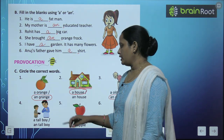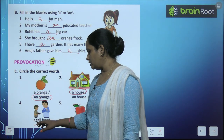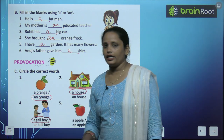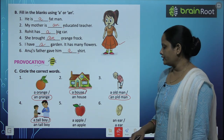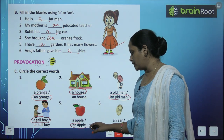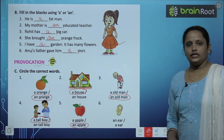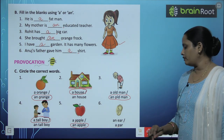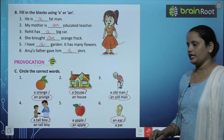A Tall Boy या An Tall Boy? Tall का T एक consonant है, तो A Tall Boy is the correct answer. A Apple या An Apple? Apple का पहला letter A है — A तो एक vowel है, तो An Apple को circle कर देते हैं. An Ear या A Ear? Ear का E एक vowel है, तो An Ear को circle करेंगे.